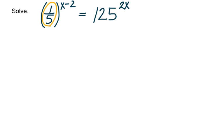So thinking to yourself, how could I rewrite 1 fifth? Well remember, 1 fifth is going to be the same as 5 raised to the negative 1 power. So if I rewrite 1 fifth as 5 to the negative 1, these are equivalent, but now I'm working with a base of 5 instead of a base of 1 fifth.